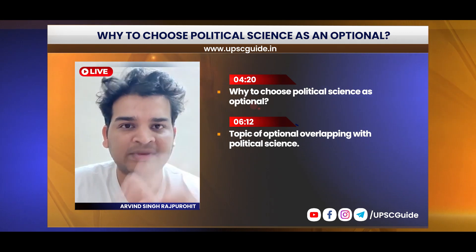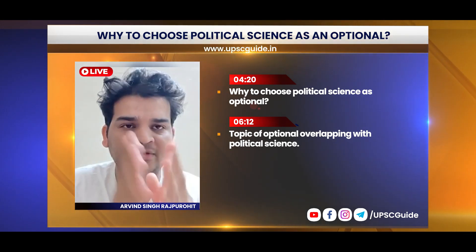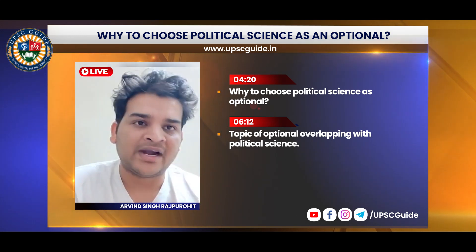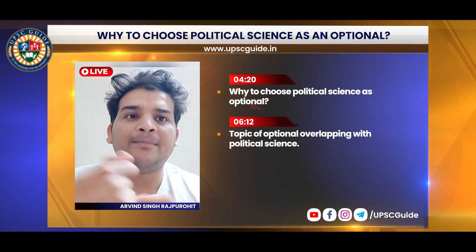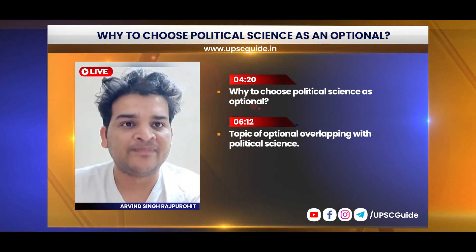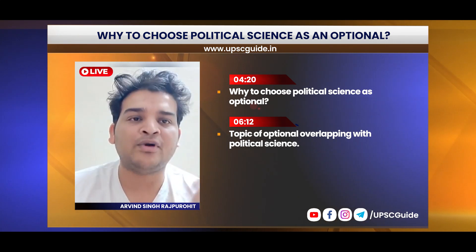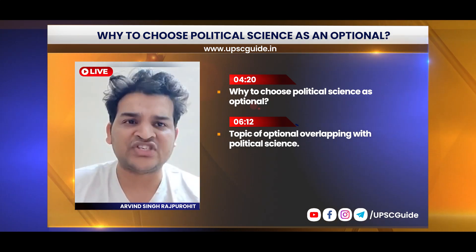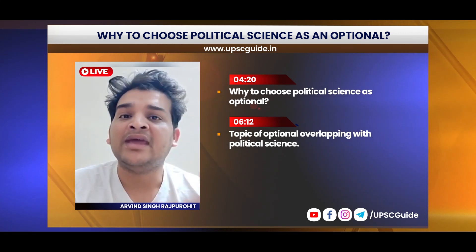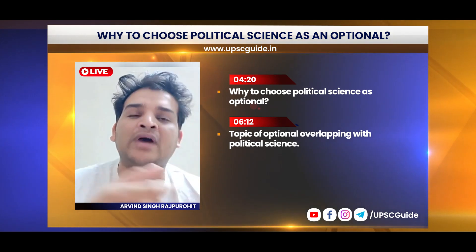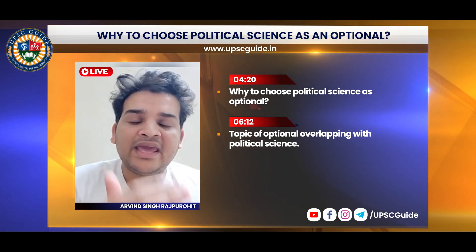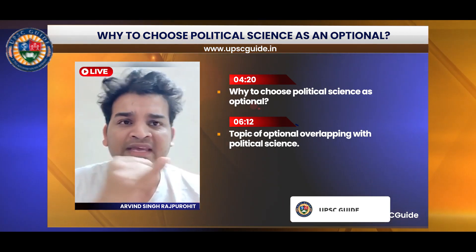In political science, like any other optional subject, there are two papers - Paper 1 and Paper 2 - each with Part A and Part B. In Paper 1, if you look at the syllabus, first there are political theories, political philosophy, political science concepts - justice, equality - these are all in your syllabus. After that, there are two types of thinkers: Western thinkers and Indian thinkers. Western thinkers include Plato, Aristotle, John Locke, and John Rawls - these are major thinkers that you are also required to study in GS4.